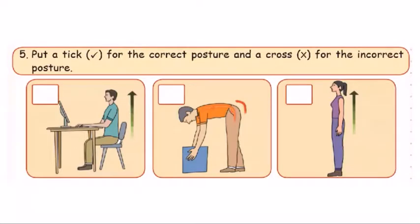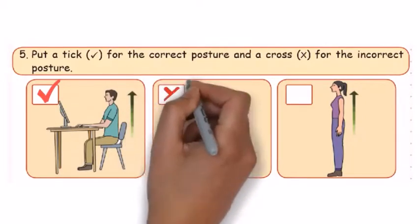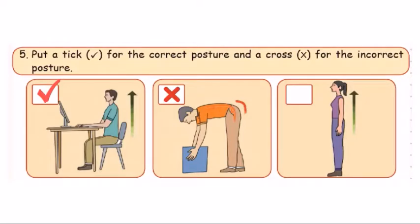The fifth exercise: make a tick for the correct posture and a cross mark for the incorrect posture. In the first picture, we use a straight-out posture — that is correct, so we tick it. The second picture shows an incorrect posture, so we put a cross mark. The next picture shows a straight-out posture again, so we tick it.